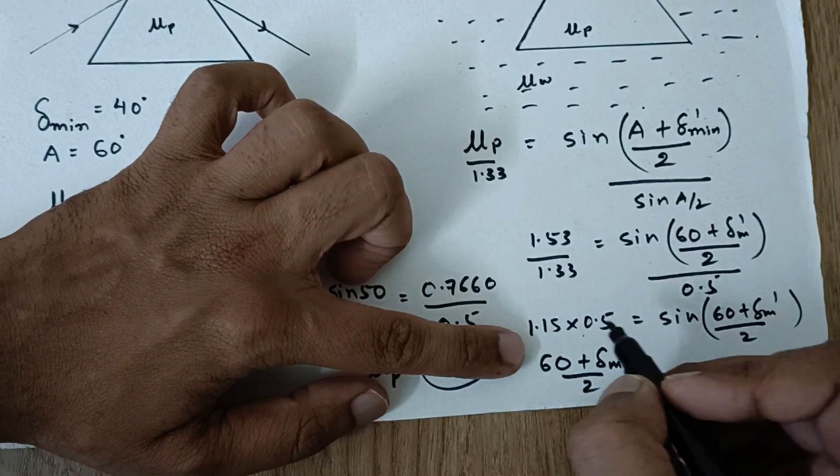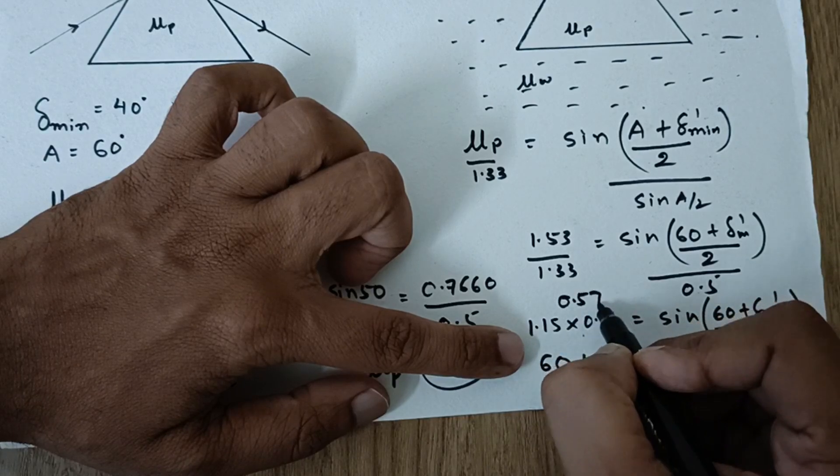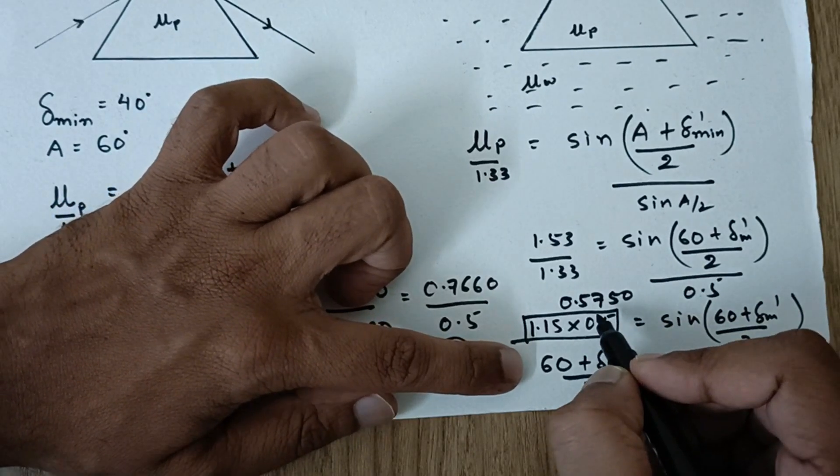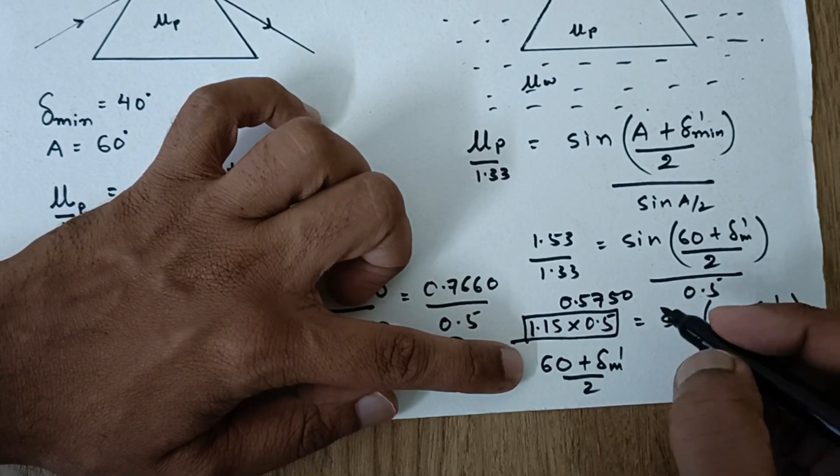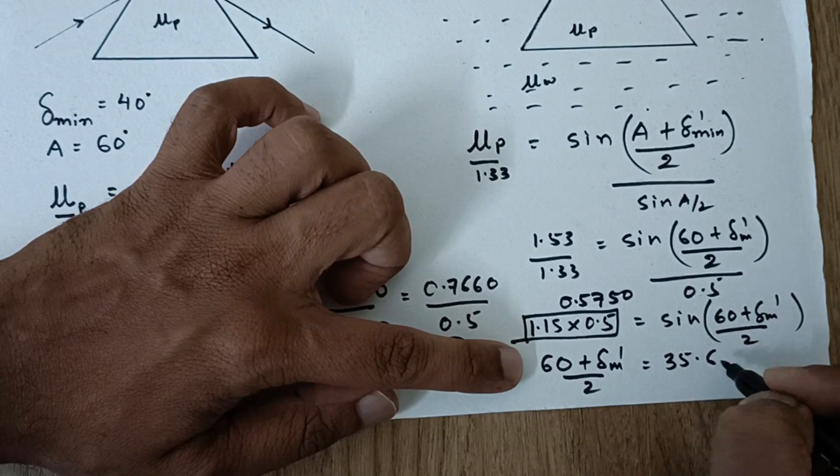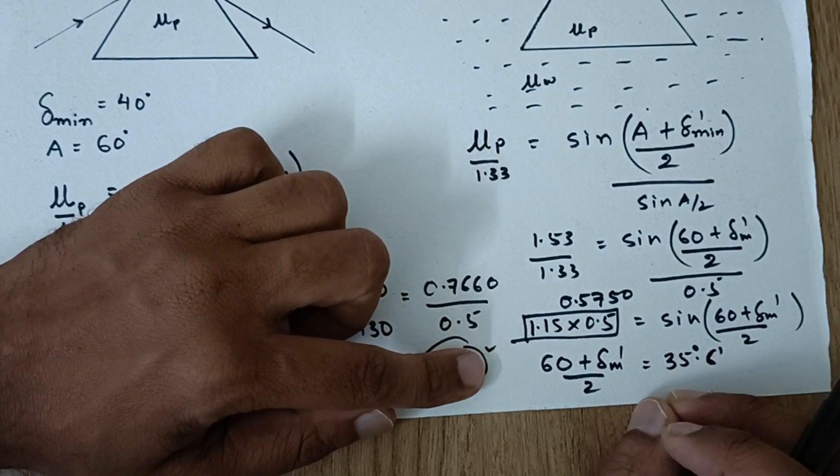So this goes over here. So it will be sin inverse. Now this is 0.5750. You can solve it with the calculator. And sin inverse of this turns out to be 35.6 degrees. So approximately 35.6 degrees is what I should say.